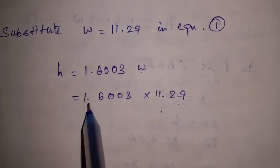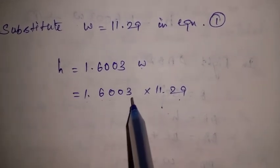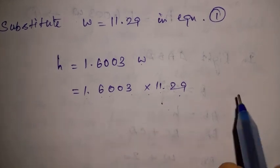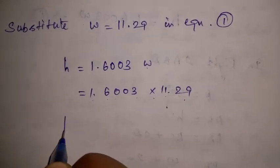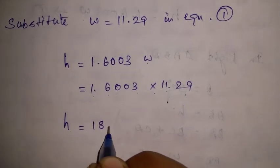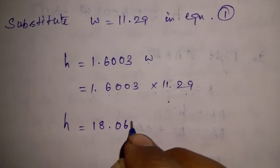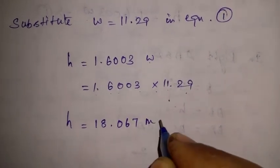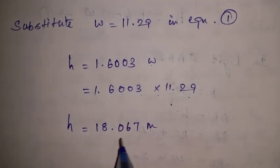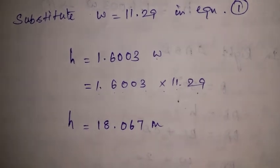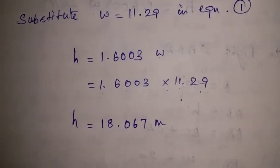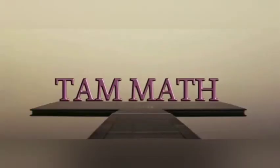Substituting W = 11.29 into Equation 1: H = 1.6003 × 11.29 = 18.067 meters. The height of the tower is 18.067 meters and the width of the canal is 11.29 meters. Thank you for watching. Subscribe to TomeMath.